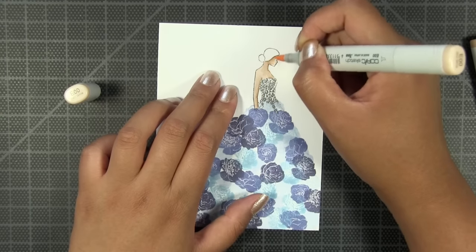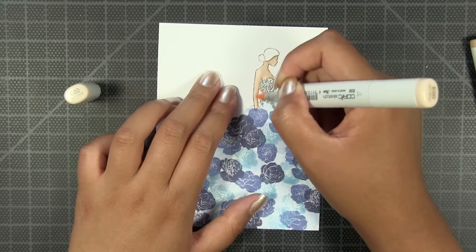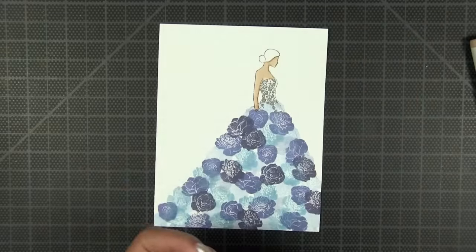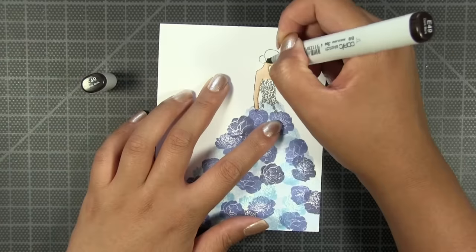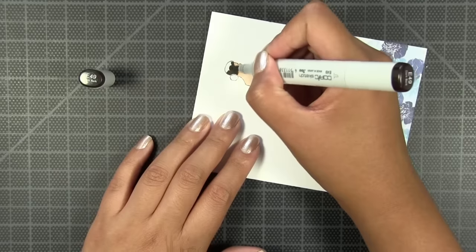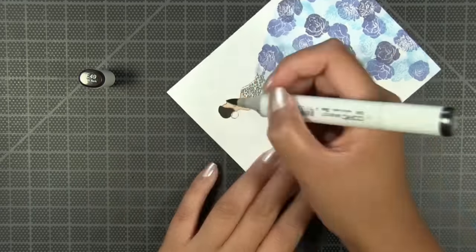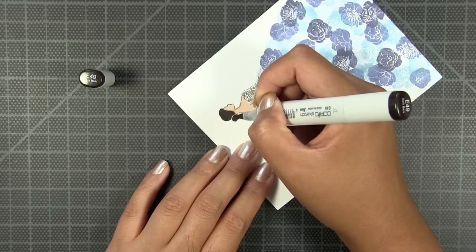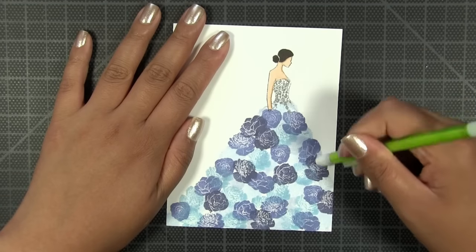Then I went back in with the lighter shade and I blended it all together. Then I'm going to take an E49 Copic marker and just color in the hair of my stamp. I do leave like a tiny sliver near the bun to give the hairdo just a little bit of definition.